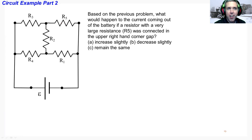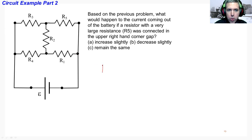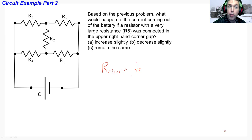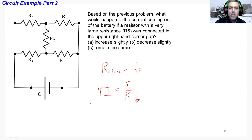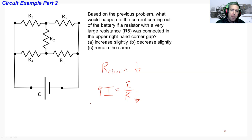If we add a resistance R5 to the circuit, it provides an extra pathway, which actually decreases the overall resistance of the circuit. If it drops the resistance of the circuit and we look at I = E/R, a lower resistance provides an increase in current. So by adding R5 in parallel, the circuit resistance drops a little, and we get a slight increase in current coming out of the battery because of the extra pathway.